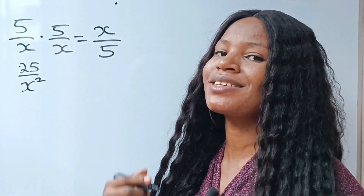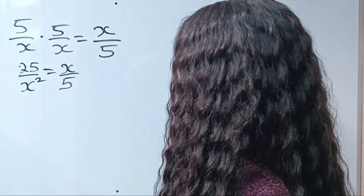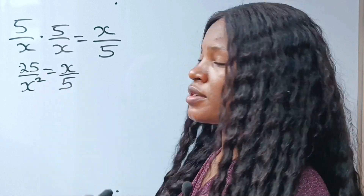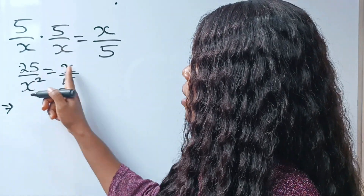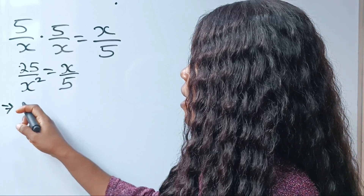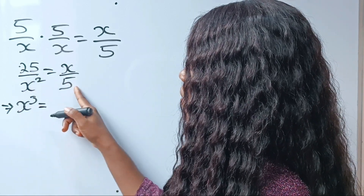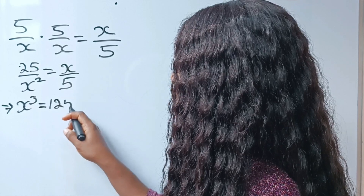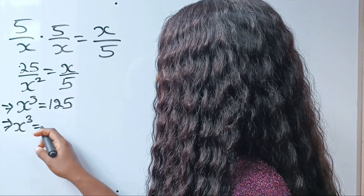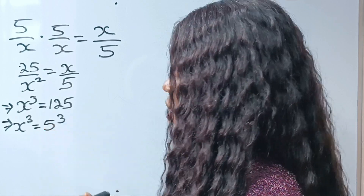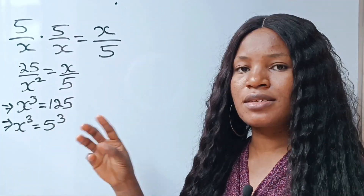x multiplied by x will give us x squared. This is equal to x divided by 5. Now let's do a cross multiplication. When we do that, we have x squared multiplied by x will give us x to the power of 3, which is equal to 25 times 5, giving us 125. This implies that x to the power of 3 is equal to 5 to the power of 3. By looking at this, you can see that the first value of x is 5.